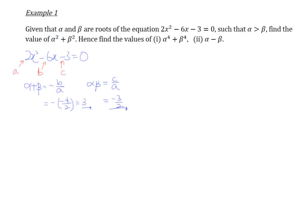What we are supposed to do is find the value of alpha squared plus beta squared using only this information. Now, many students tend to think that alpha squared plus beta squared is equal to alpha plus beta multiplied by alpha plus beta — but you need to understand that this is absolutely wrong. If things were so easy, there'd be no need to learn binomial theorem at all.